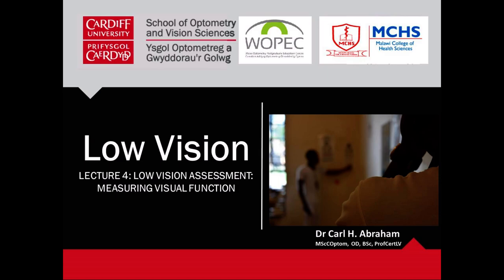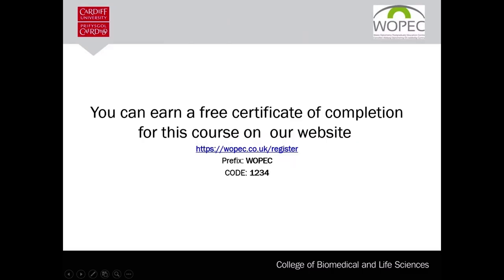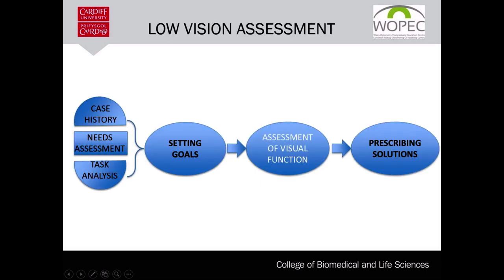Today we'll be looking at one component of low vision assessment: visual function. You can obtain a free certificate upon completion of this course by logging on to our website at www.wopec.co.uk. Your prefix would be WOPEC and your code is 1234. Low vision assessment has been categorized into three components: goal setting, assessment of visual function, and prescribing solution. Our focus today will be on assessment of visual function.